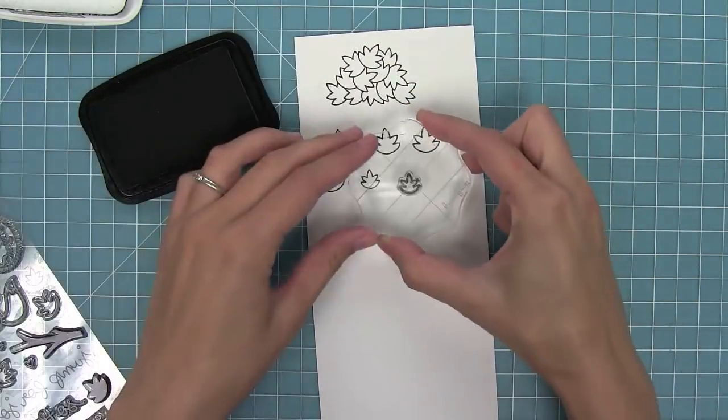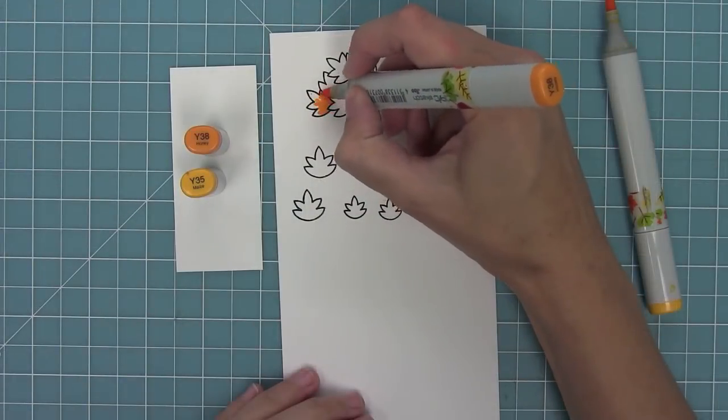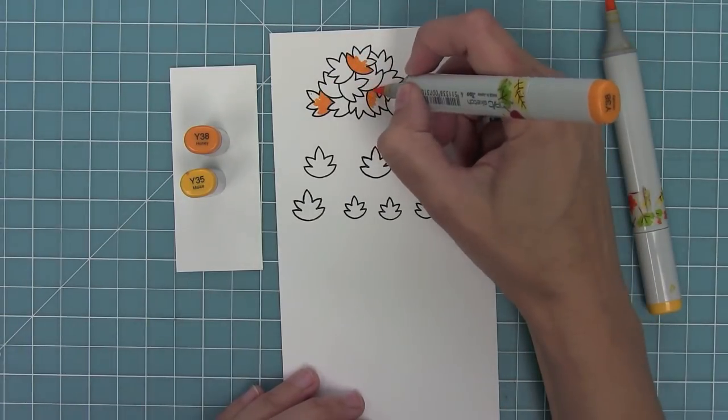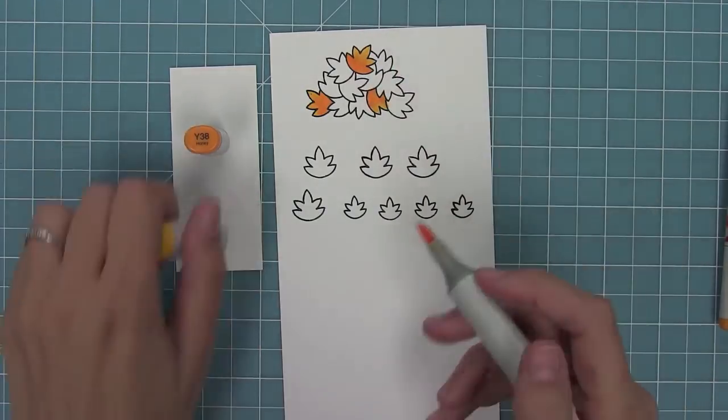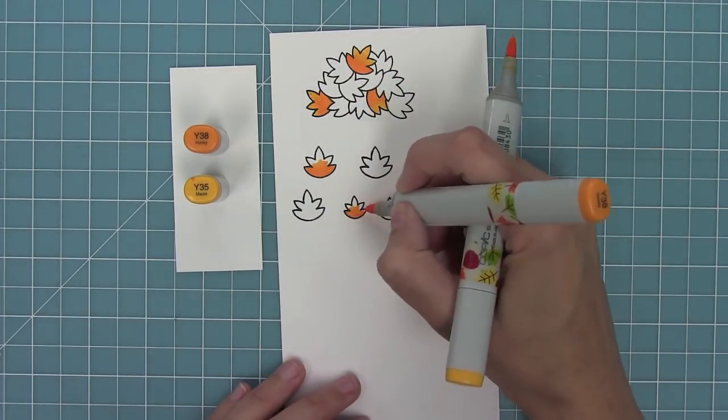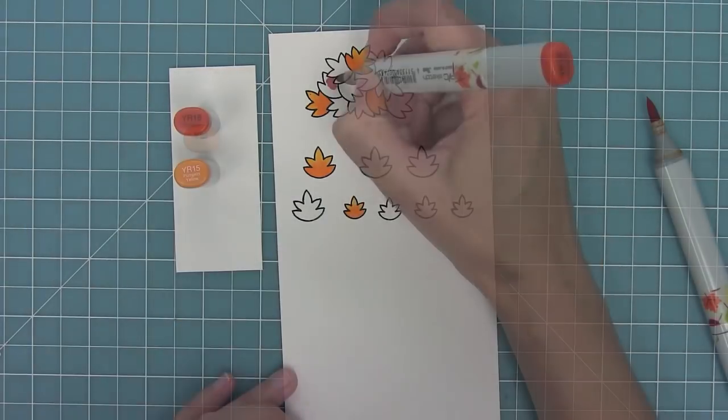Next I'm going to stamp the pile of leaves and the individual leaves from this set and start coloring them in. I'm starting off first here with some oranges and yellows, blending those out. I'm just using two markers on each leaf, making it nice and simple to color in a bunch of these.